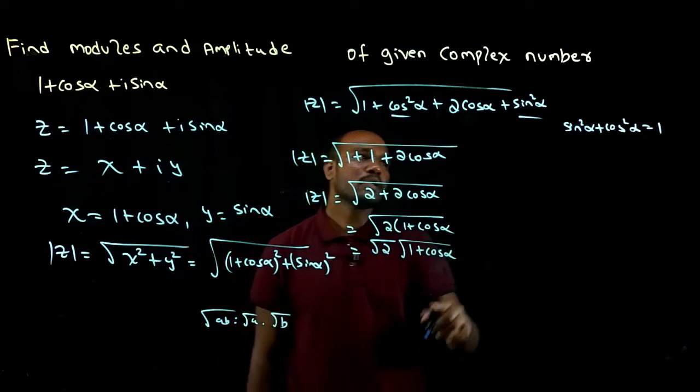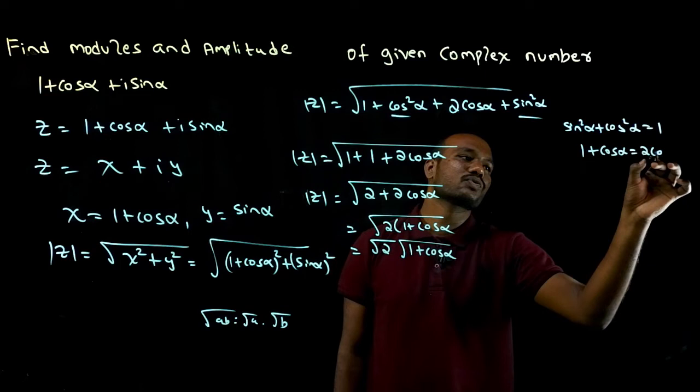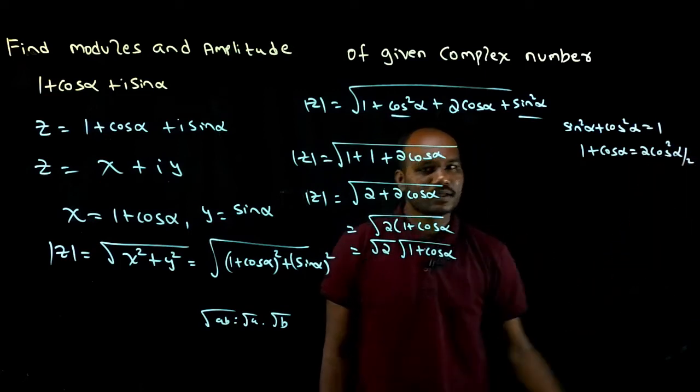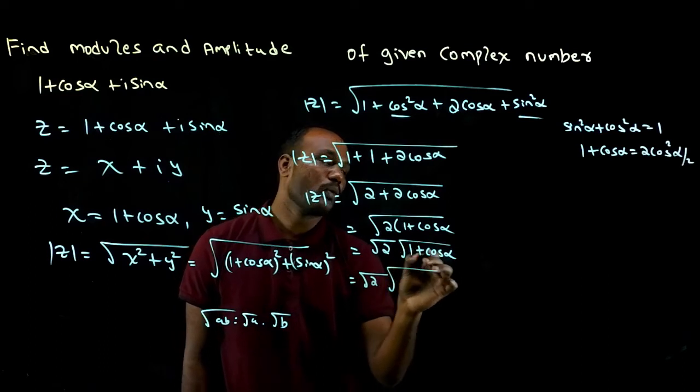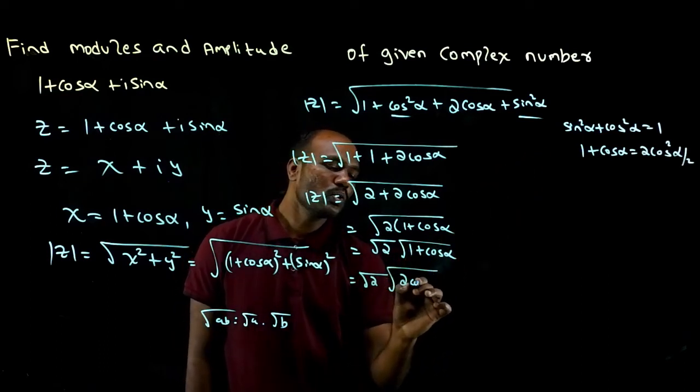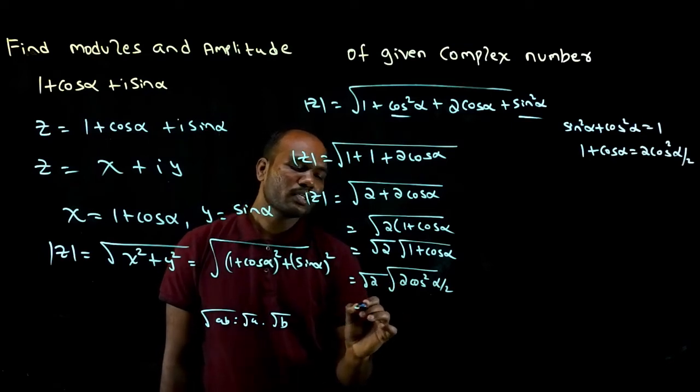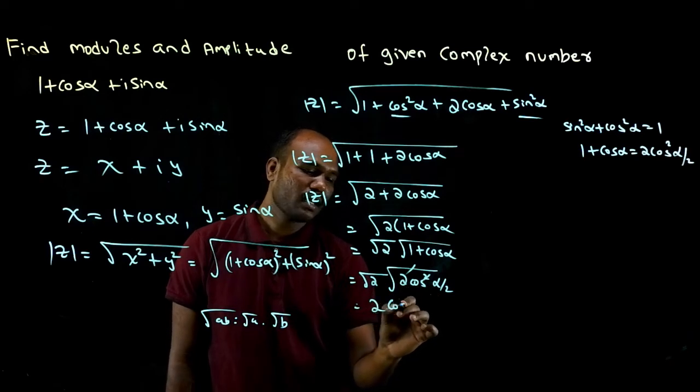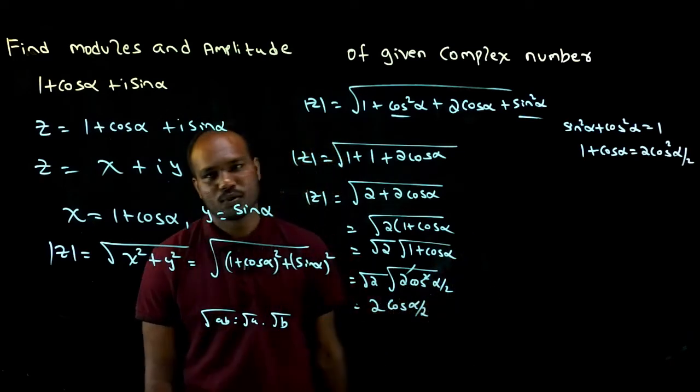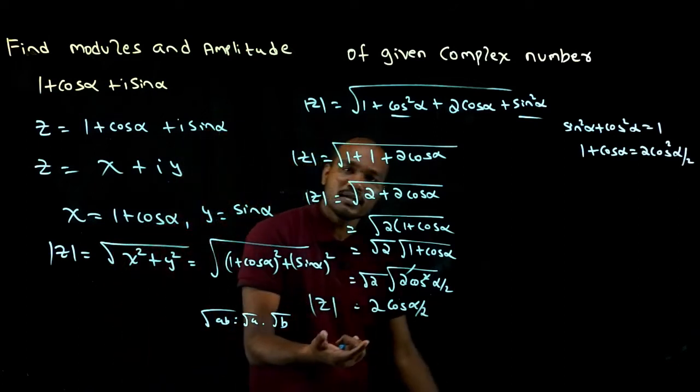This is another formula you need to remember: 1 plus cos alpha equals 2 cos square alpha by 2. So I'll get root 2 times root of 2 cos square alpha by 2. Root 2 times root 2 is 2, and the square and square root cancel, giving cos alpha by 2. This is the modulus of the given question.